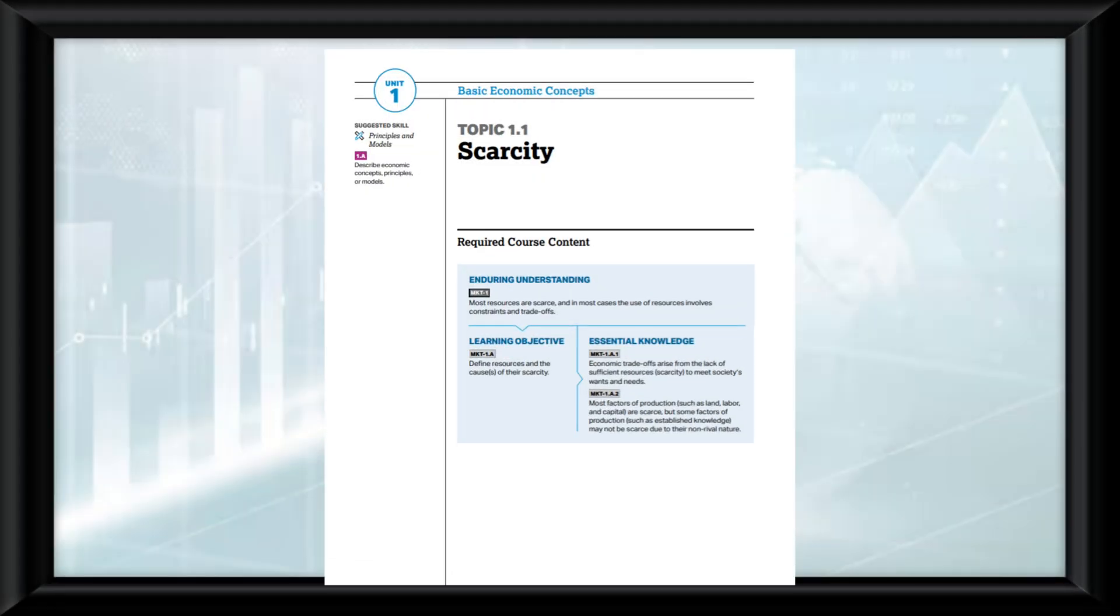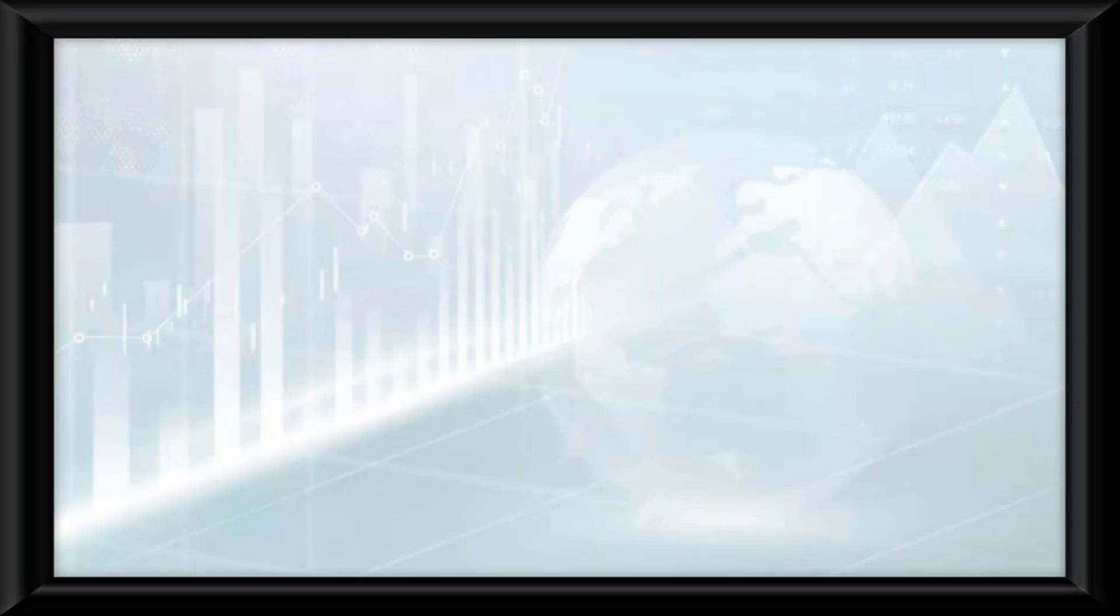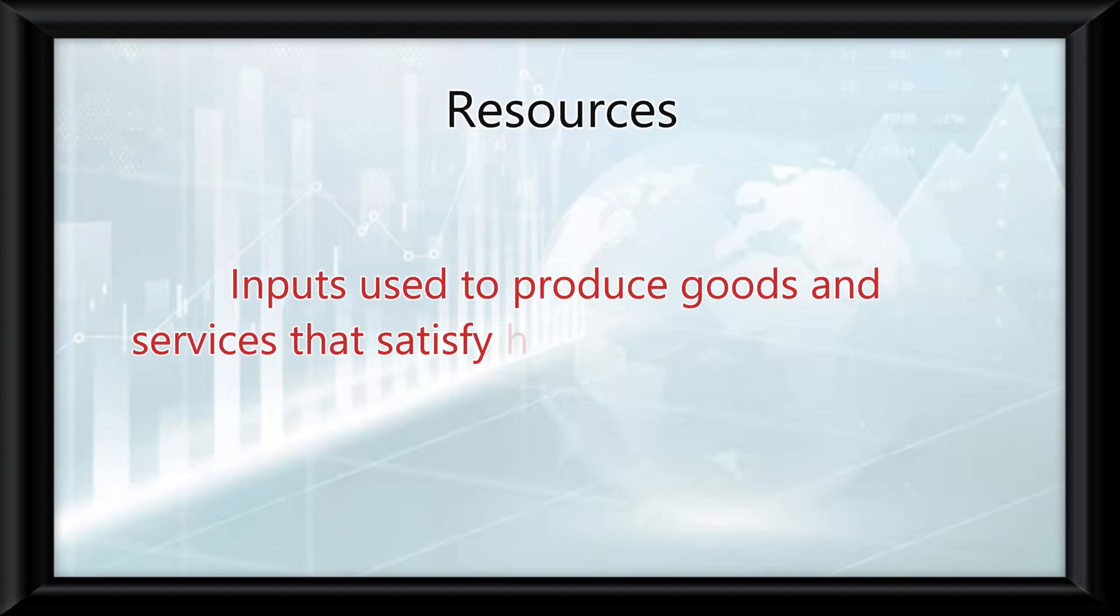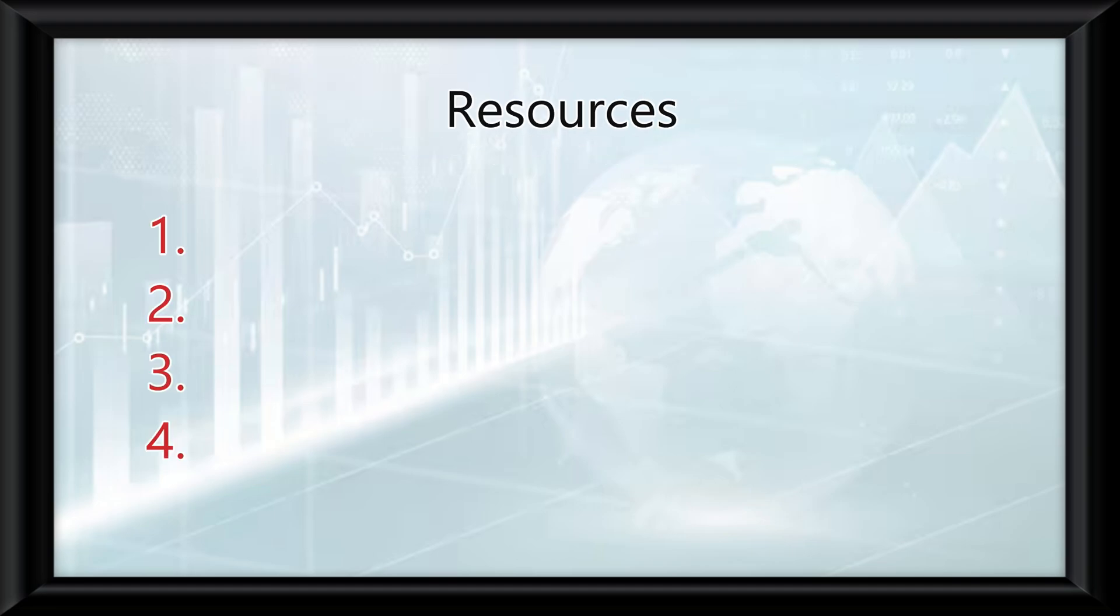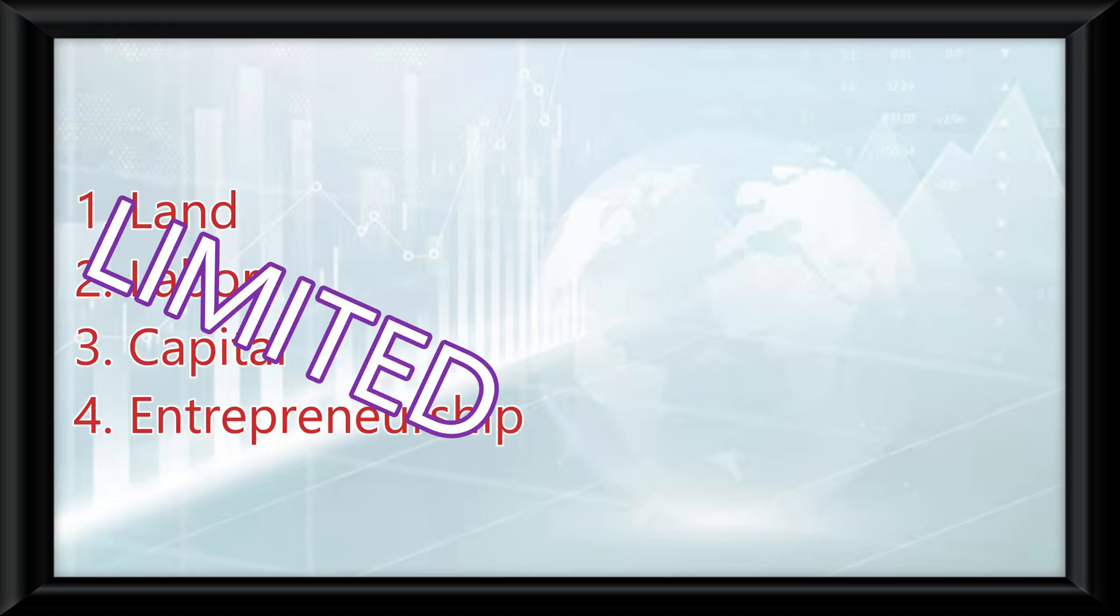Topic 1.1 is all about the concept of scarcity in economics. Resources are defined in economics as inputs used to produce goods and services that satisfy humans' wants and needs. These resources are typically split into four groups: land, labor, capital, and entrepreneurship. Scarcity exists because these resources are limited, while human wants and desires are virtually unlimited.